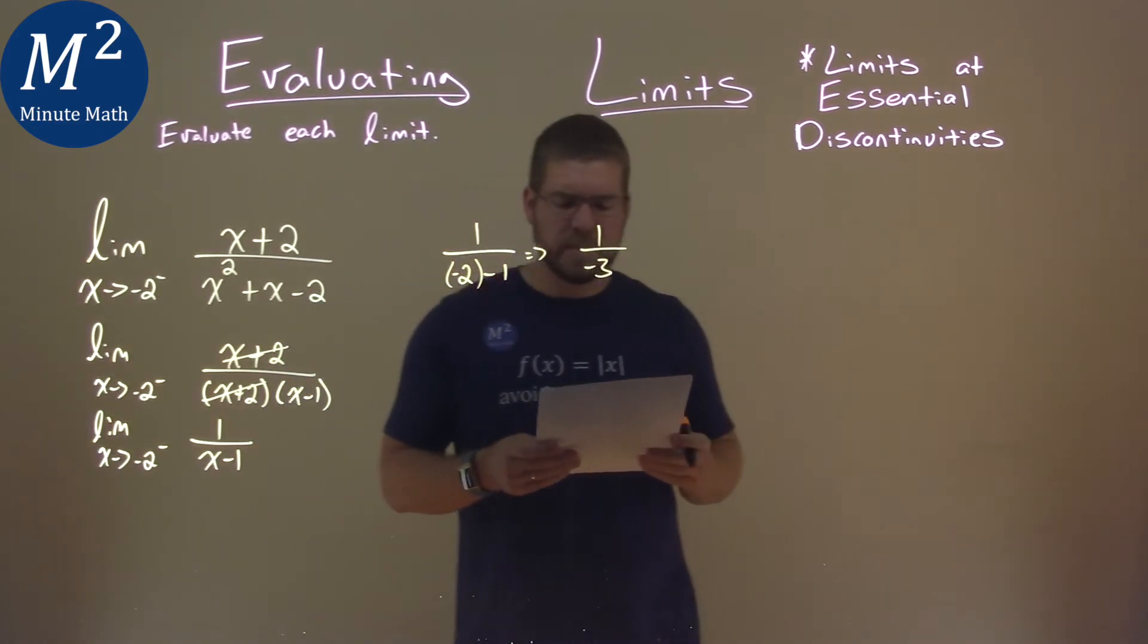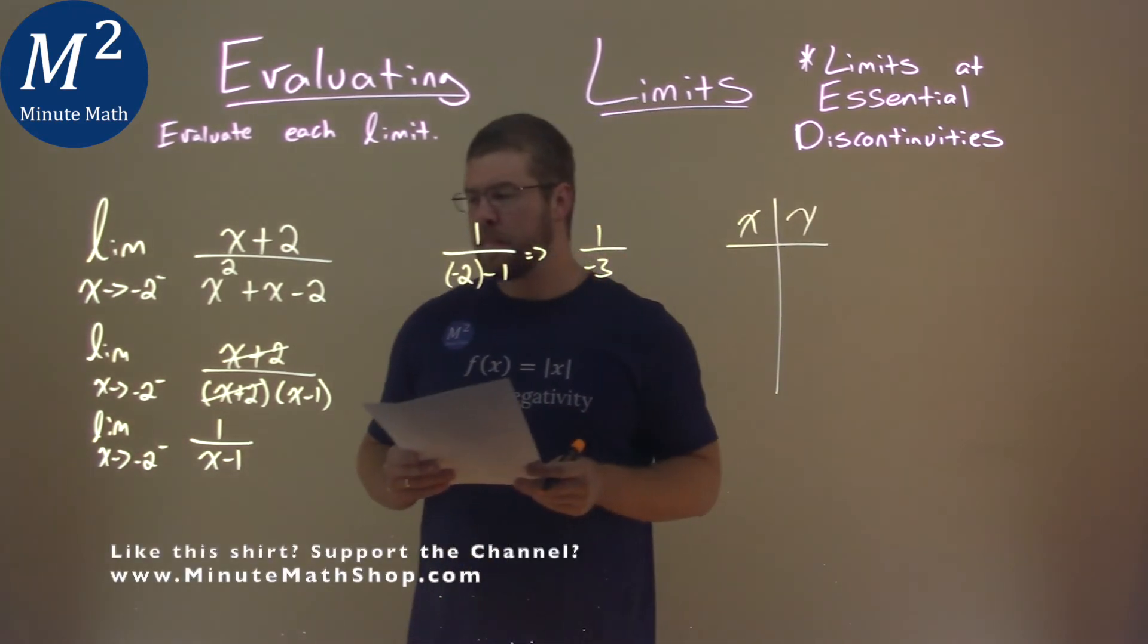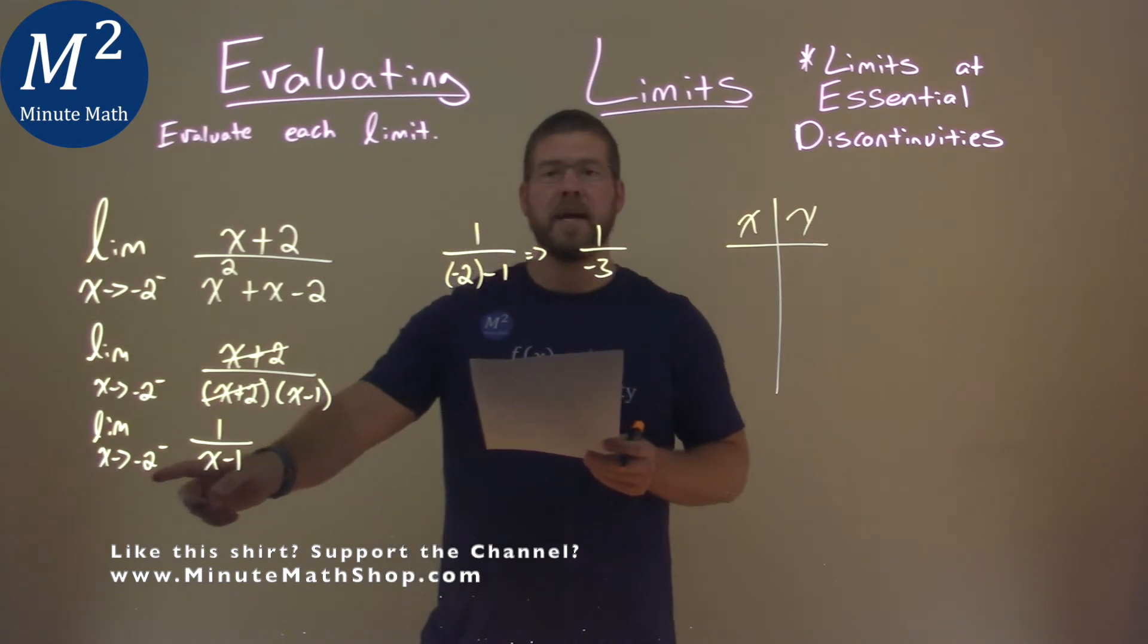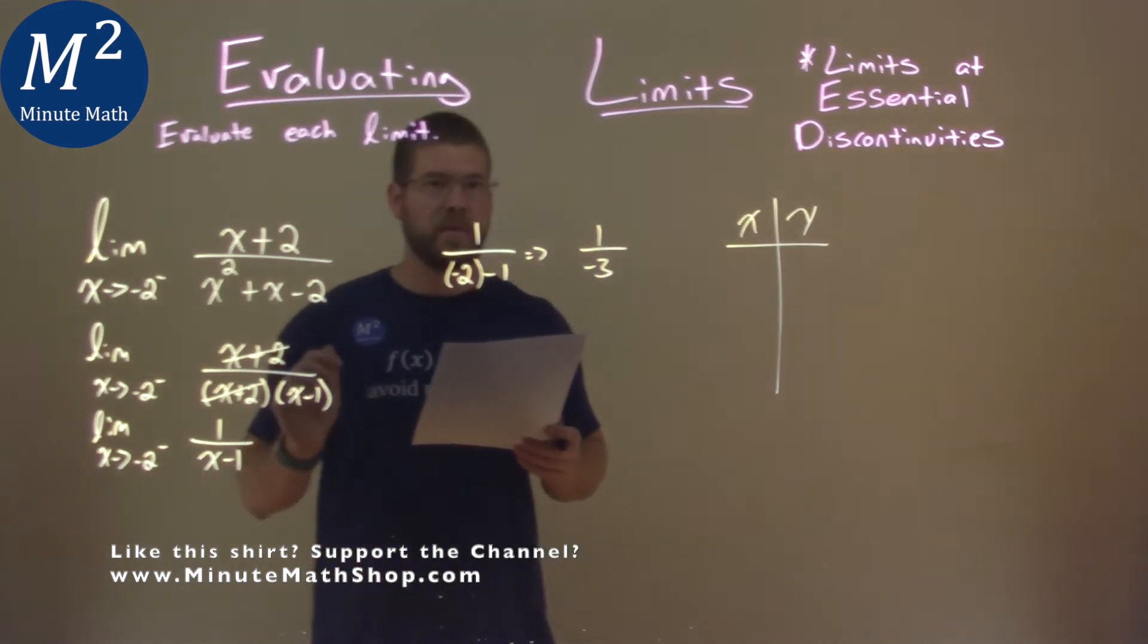And we actually can see that with a table here. So I'm making a little table here, and I've calculated some values for you. And we're going to see what happens if we approach negative 2 from the left. So I'm going to put some values in, and we'll approach negative 2 from the left here.